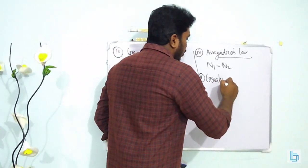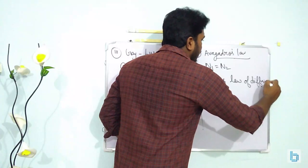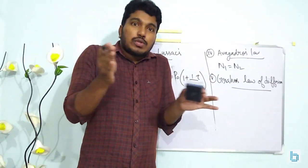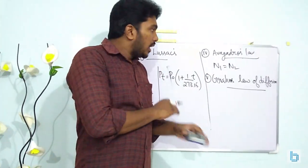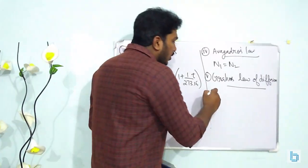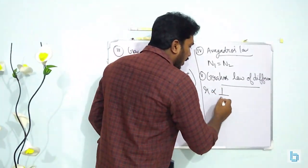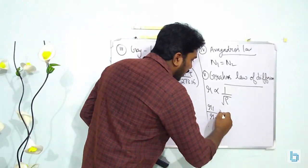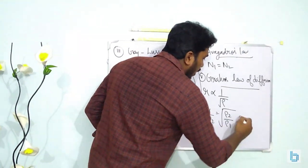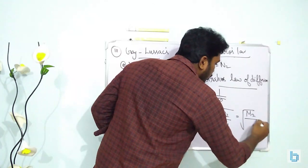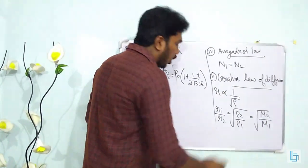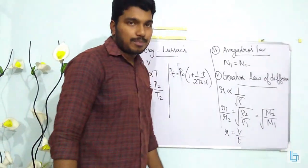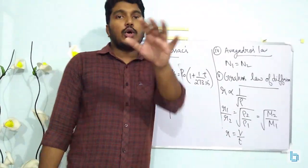The next law is Graham's law of diffusion. Suppose you are taking two gases under the same conditions of temperature and pressure, which are allowed to diffuse into each other. Based on Graham's law, the rate of diffusion is proportional to 1/√ρ, where ρ is the density. We can write R1/R2 = √(ρ2/ρ1), which is also equal to √(M2/M1). We can also write R = volume/time, and R ∝ 1/√ρ.